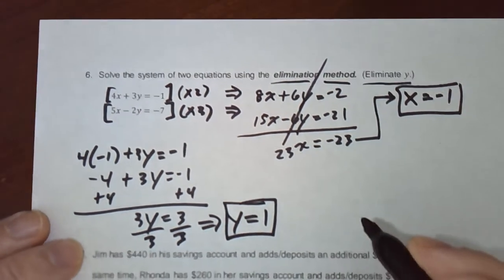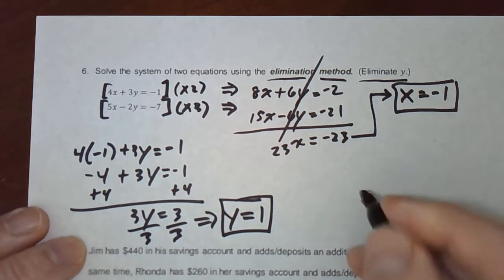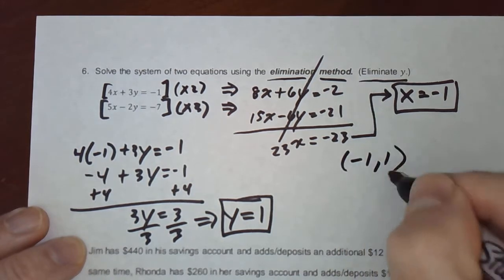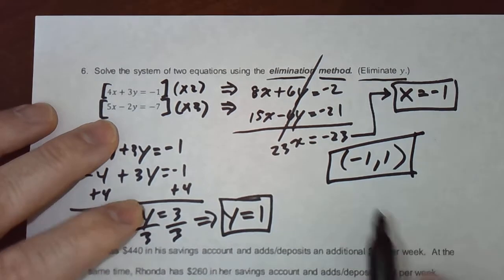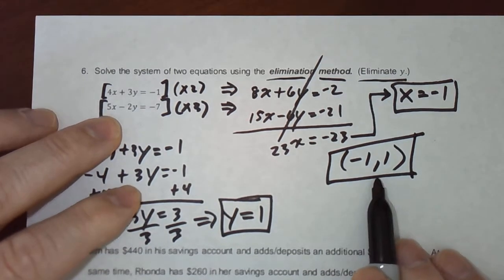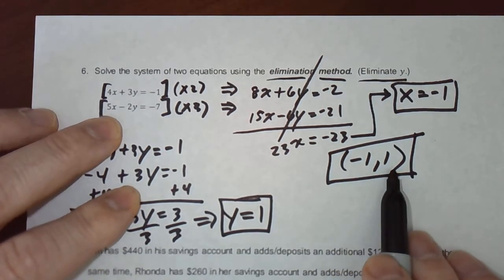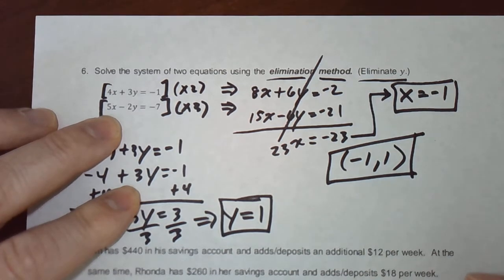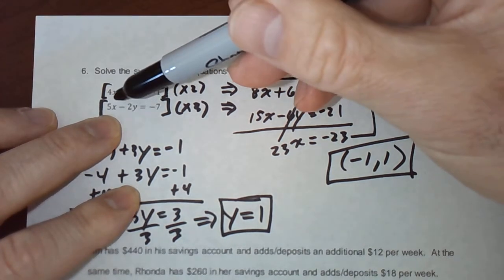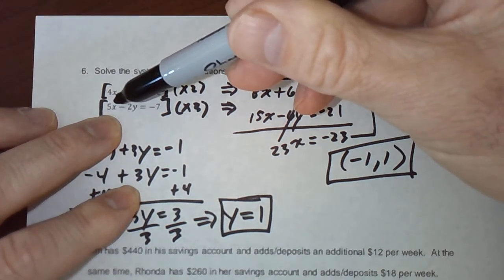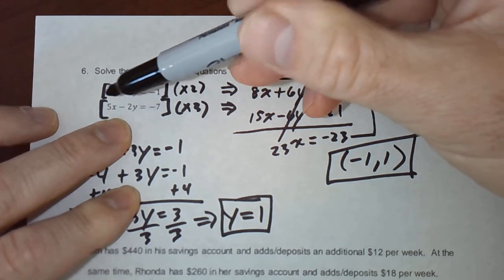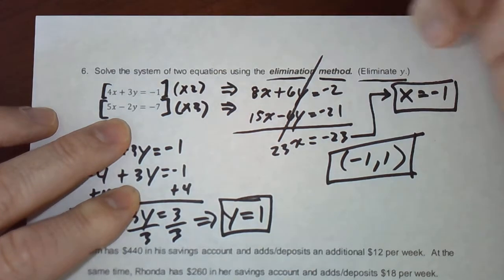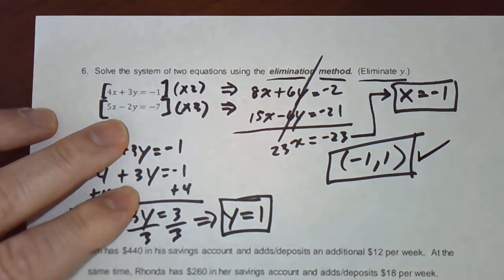So the ordered pair, the solution to that system of equations, is negative 1, 1. I'm just going to verify that by plugging in x equals negative 1 and y equals 1 into the second equation. 5 times negative 1 is negative 5. Minus 2 times 1, which would be minus 2. Negative 5 minus 2 is indeed negative 7. So we get the correct answer.